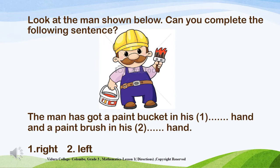Look at the man shown below. Can you complete the following sentence? The man has got a paint bucket in his blank hand and a paint brush in his blank hand. Look at the picture again. The man has got a paint bucket in his right hand and a paint brush in his left hand.